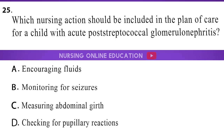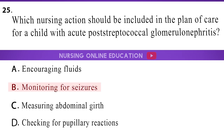Question 25. Which nursing action should be included in the plan of care for a child with acute post-streptococcal glomerulonephritis? A. Encouraging fluids. B. Monitoring for seizures. C. Measuring abdominal girth. D. Checking for pupillary reactions. The answer is option B: Monitoring for seizures.